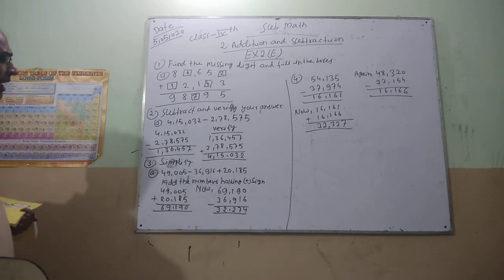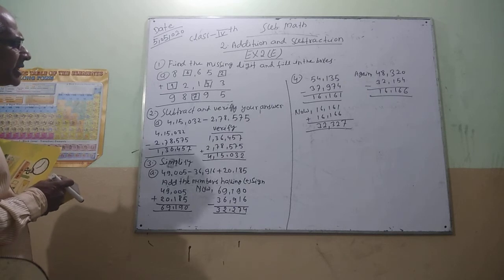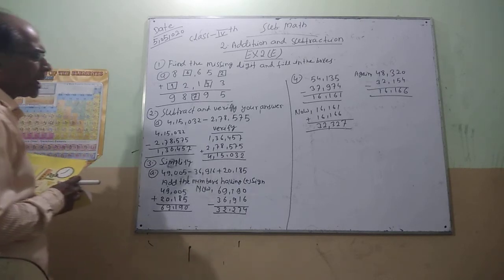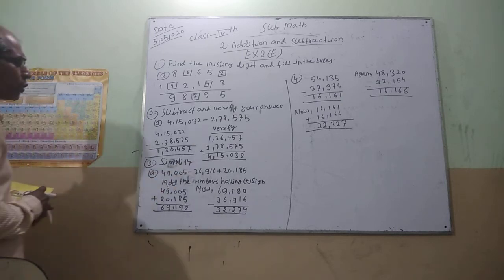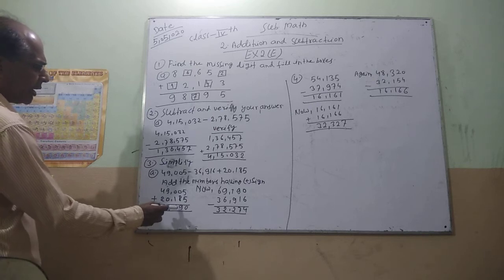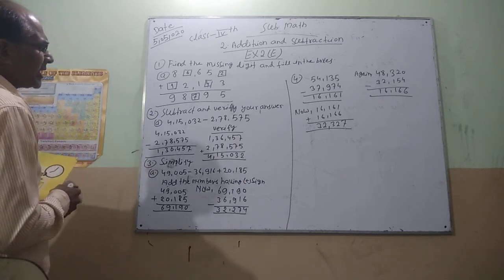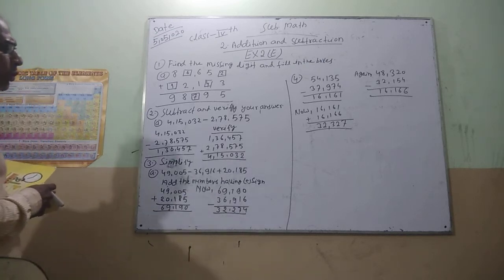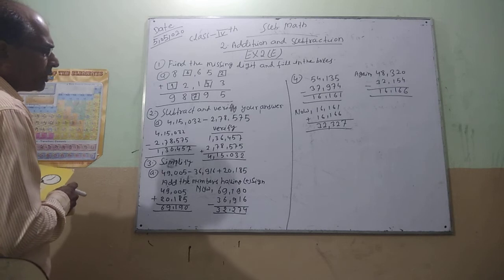Now simplify the number. Times is 49,500 minus 26,960 plus 20,485. First of all, plus at the numbers times plus sign. The number of times is 49,500 plus 20,485. The number of times is 69,900 plus 20,485.